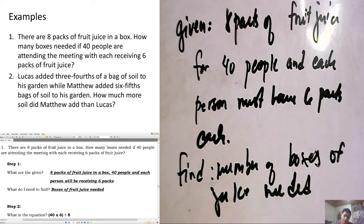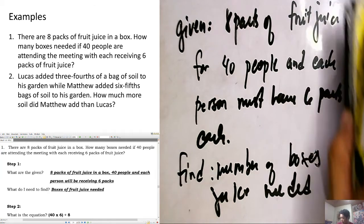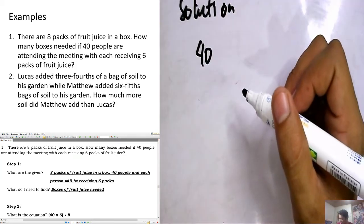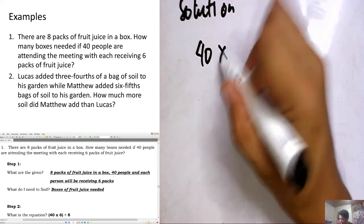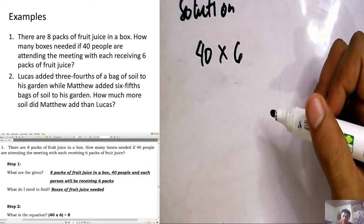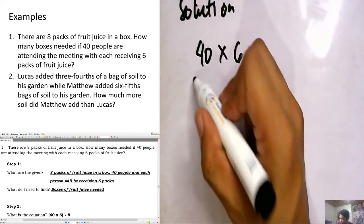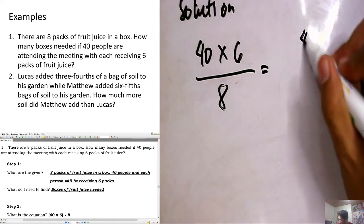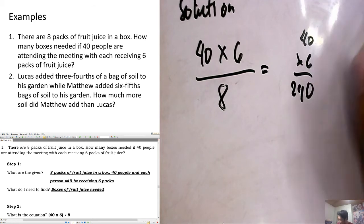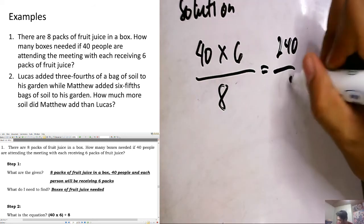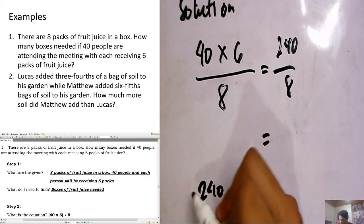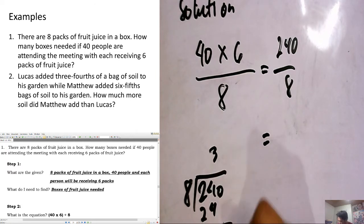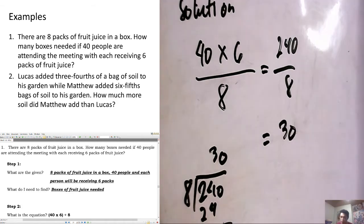The third part is the solution. If there are 40 people attending and each must have 6 packs of fruit juice, we multiply 40 times 6. That gives us 240. Then, since 8 packs fit in a box, we divide 240 by 8. Using scratch work: 3 times 8 is 24, bringing down 0 gives 30. So our answer here is 30.